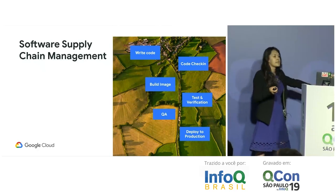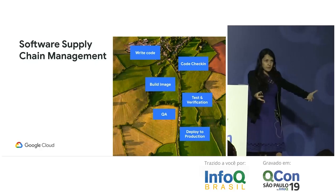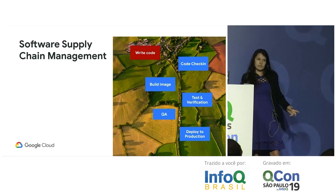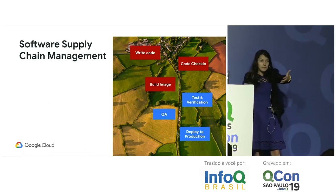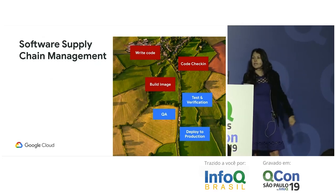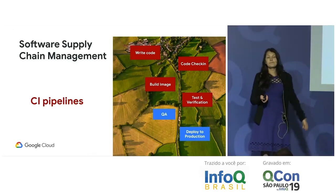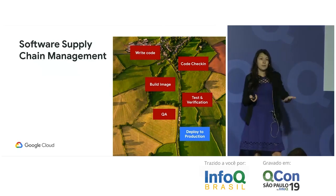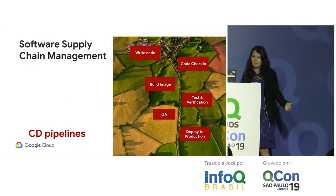Software supply chain is very similar to food supply. Just like with food — you plant seeds, grow them, harvest them, make food, and deliver it to the table — in a software supply chain you write code, check it in, build the image, containers, or binary, test and verify it using CI pipelines, run QA testing, and finally deploy to production using continuous delivery pipelines.